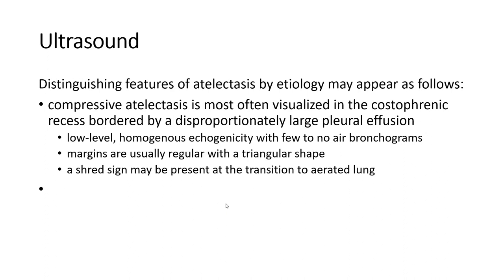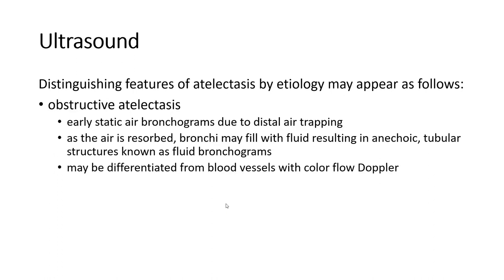The imaging features of atelectasis by etiology may appear as follows. Compressive atelectasis is most often visualized in the costophrenic recess bordered by the proportionally large pleural effusion. Absorptive atelectasis: early static air bronchogram is due to distorted air trapping. As the air is resorbed, bronchi may fill with fluid resulting in an echogenic tube structure known as a fluid bronchogram, which may be differentiated from blood vessels with color flow Doppler.